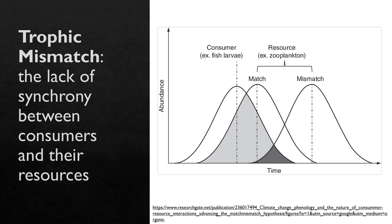Trophic mismatch is the lack of synchrony between consumers and their resources, and is a concern in a changing climate, especially because this synchrony is often reliant on temperature, day length, and a predictable climate. Today we will focus on the early coming of spring and how this is affecting many species and the way they interact with their environment and each other.